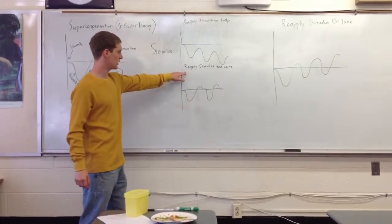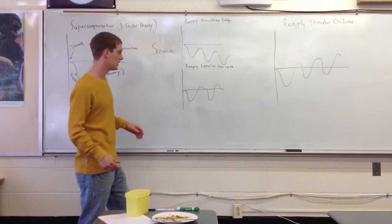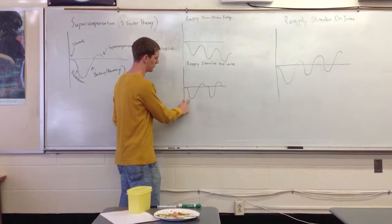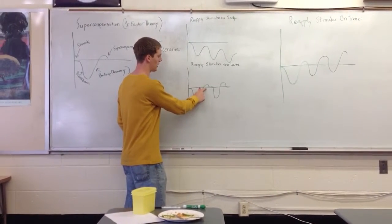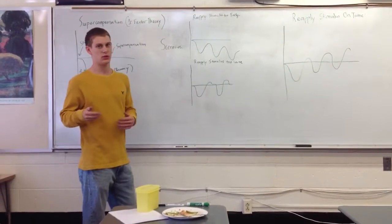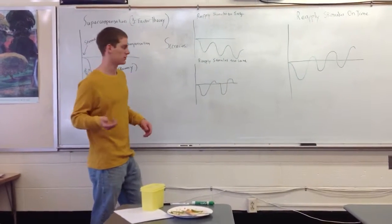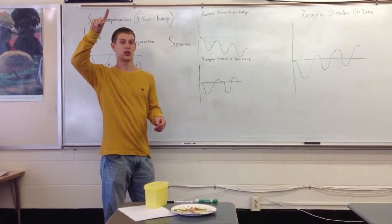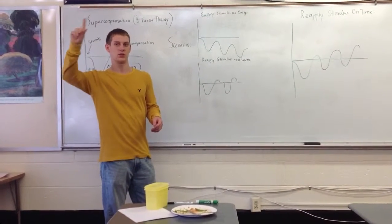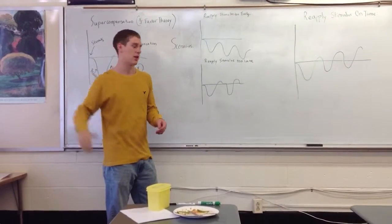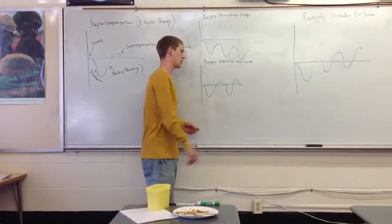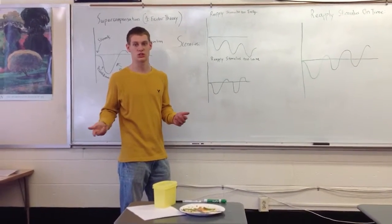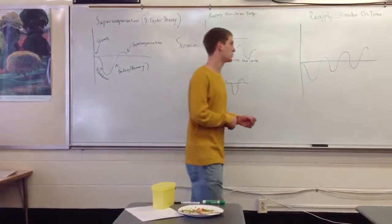Now, the next scenario is reapplying a stimulus too late. Applying it too late would be after the supercompensation phase. You would actually be allowing your body to get stronger, but then waiting for that supercompensation to end, and you go back to your baseline. What would actually happen here is you wouldn't get stronger, but you wouldn't get weaker, you'd just stay the same.